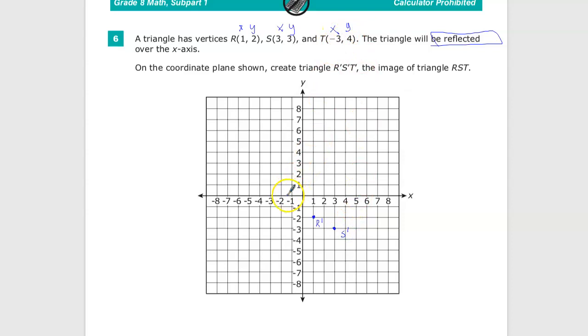And T's value is at negative 3 and 4. So that's 1, 2, 3, 4, and then 1, 2, 3, 4. So there it is.